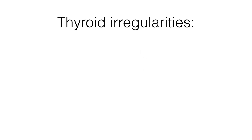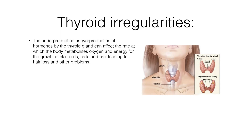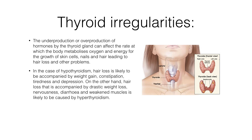Number 2: Thyroid irregularities. The underproduction or overproduction of hormones by the thyroid gland can affect the rate at which the body metabolizes oxygen and energy for the growth of skin cells, nails, and hair, leading to hair loss and other problems. In the case of hypothyroidism, hair loss is likely to be accompanied by weight gain, constipation, tiredness, and depression.